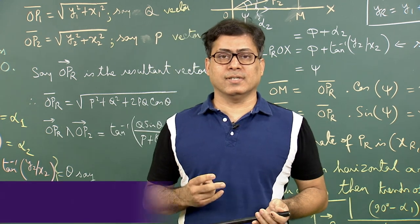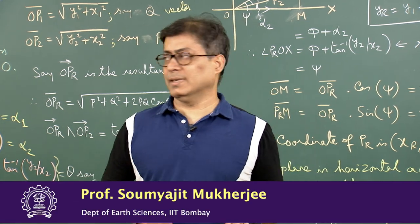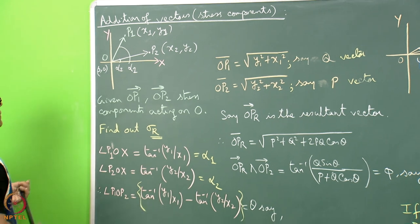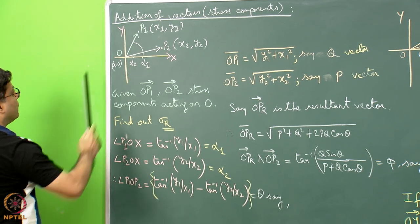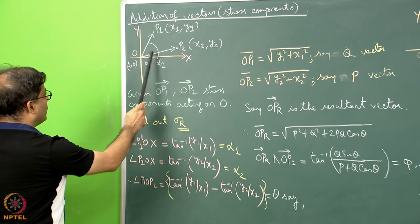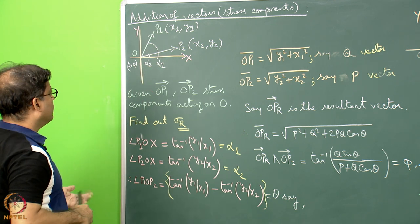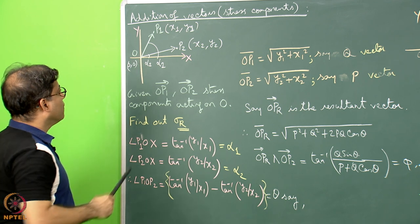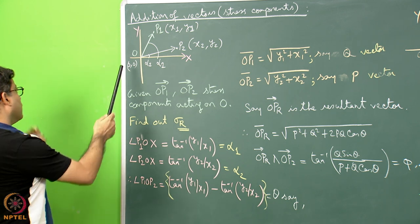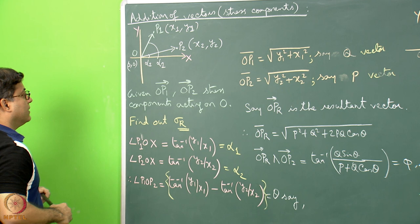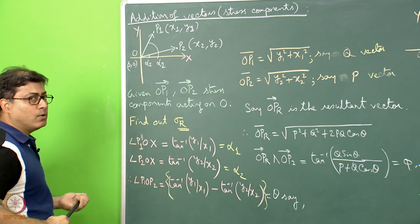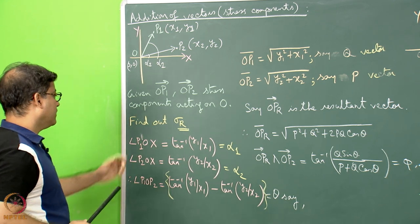We are going to discuss how stress components can be added. We start with the simple case. Consider orthogonal coordinate axes Ox and Oy. There is a vector OP1 from O towards P1, with coordinate (x1, y1). There is another vector OP2, and the arrows give the direction of action of the stresses acting on a common point O. P2 has a coordinate (x2, y2). The question is: if OP1 and OP2 are two stress vectors, what is the resultant vector sigma_r — its coordinate, magnitude, and stress components?